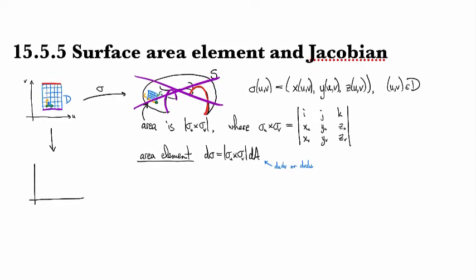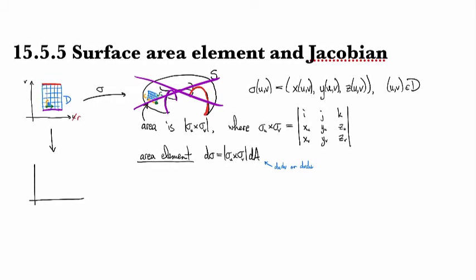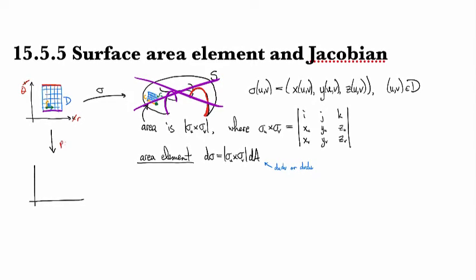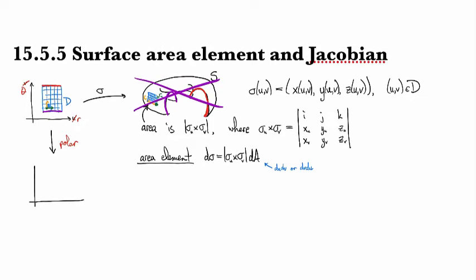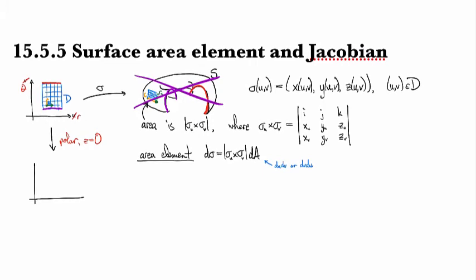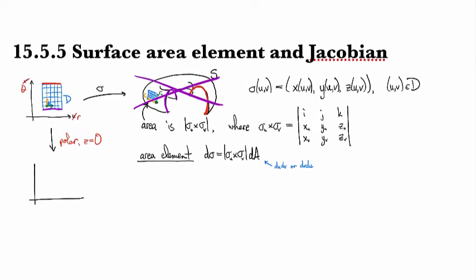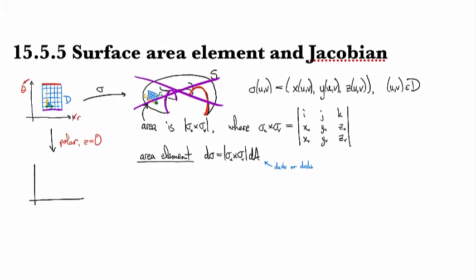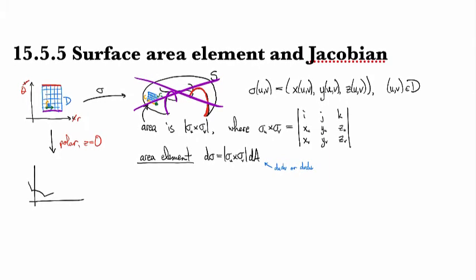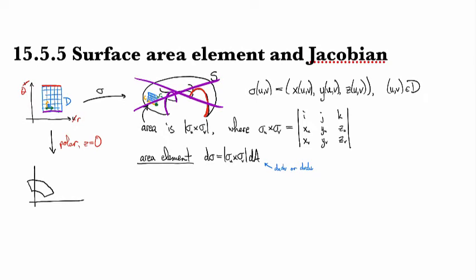So I'll pretend that this is R and this is theta. And we'll use polar. So we're going to take Z equal to zero to embed it into the XY plane. Then this region would probably look something like, say, this.